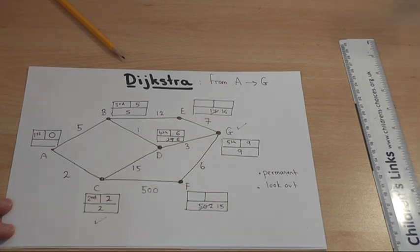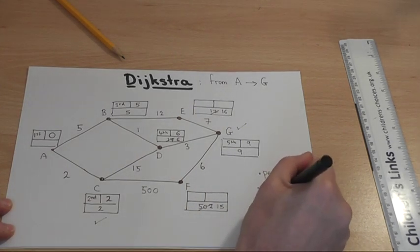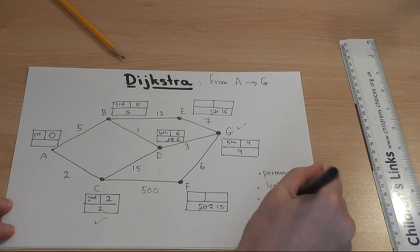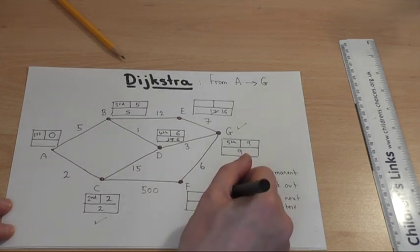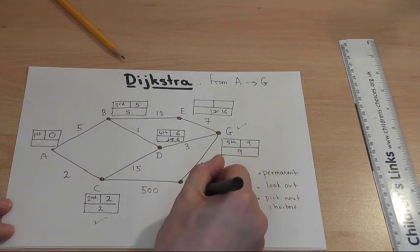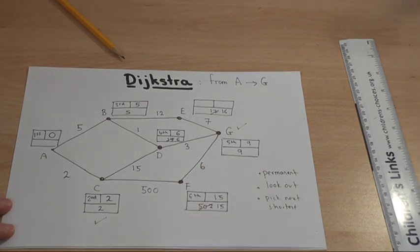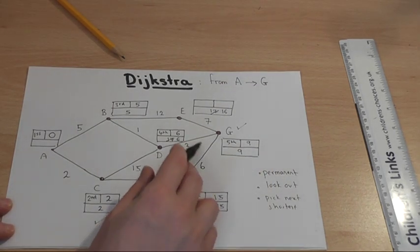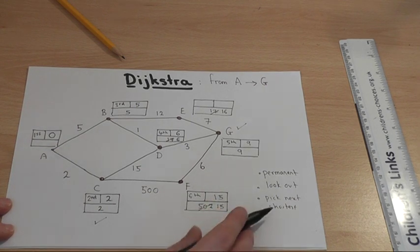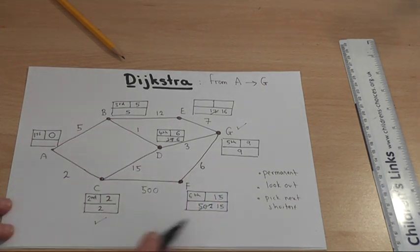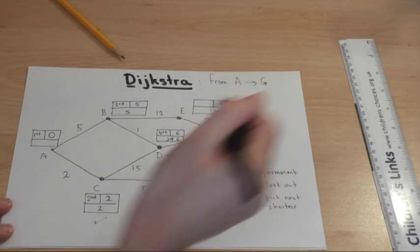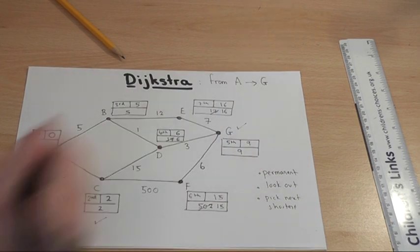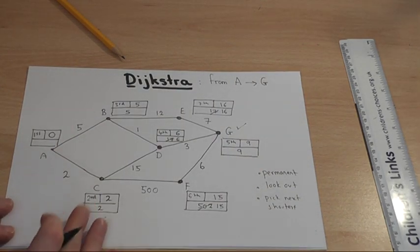I fill in the temporary ones, and then pick next shortest, which is the 15. 16. Make it permanent. Look out. Well, there's nowhere to go now from there. So I stop, and then pick the next shortest temporary one in the entire network. Oh, 16. 16. And that was my 7th node. I can then stop. There are no more nodes to fill in.